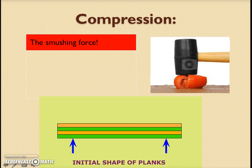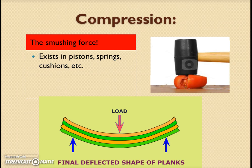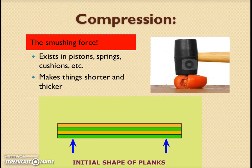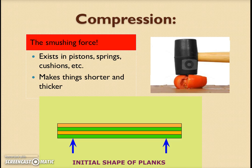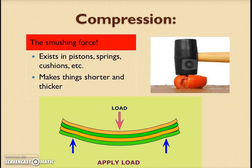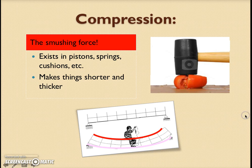What about compression? Compression is the smushing force. It exists in pistons, springs, cushions, pillows — anything that gets squished. Compression makes things shorter and thicker. So where on this set of beams would you see compression at work? Consider the example you just worked out. Where do you see something getting shorter than it was before as it bends inward and smooshes? If you said the top of the bridge, then you're right. This arc is significantly shorter than the distance between these two points, even though it's curved. Compression is a big problem in the top of the bridge, whereas tension is a problem in the bottom.